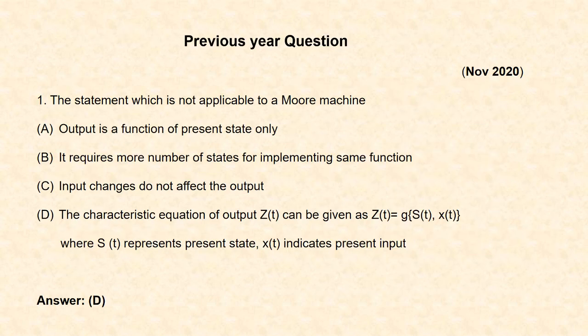Next, we will see a previous year question asked in November 2020. The question asks: which statement is not applicable to a Moore machine? The options are: (A) Output is a function of present state only; (B) It requires more number of states for implementing the same function; (C) Input changes do not affect the output; (D) The characteristic equation of output Z(t) = G(S(t), X(t)), where S(t) is the present state and X(t) is the present input. As we know, in a Moore machine the output depends only on the present state, not on the present input. Therefore, option D is not applicable to a Moore machine, so the correct answer is D.